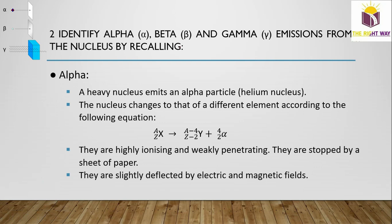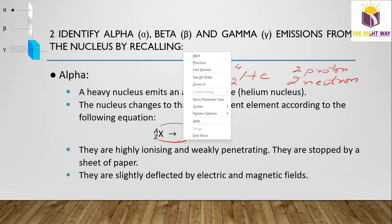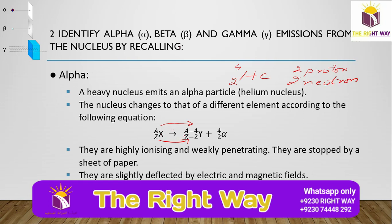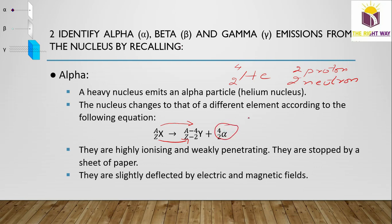Alpha particles are emitted when a heavy nucleus decays. An alpha particle is a helium nucleus, which contains four nucleons: two protons and two neutrons. When a nucleus emits an alpha particle, it converts into another nucleus because its atomic mass decreases by four and its atomic number decreases by two.